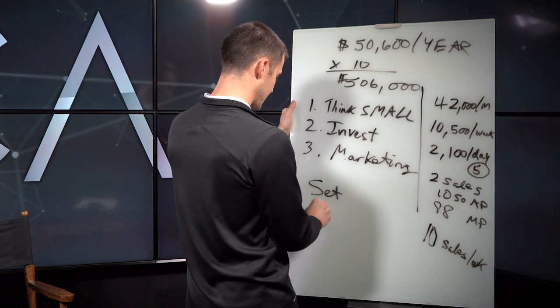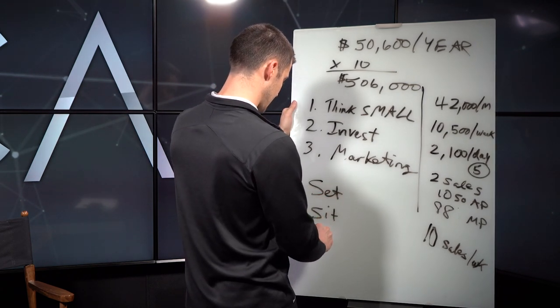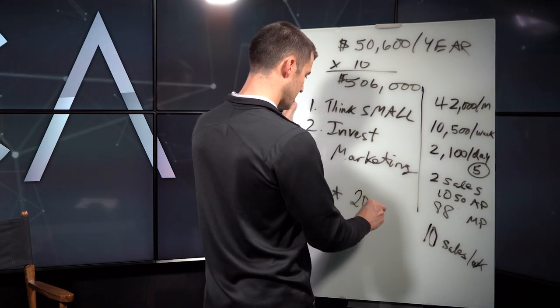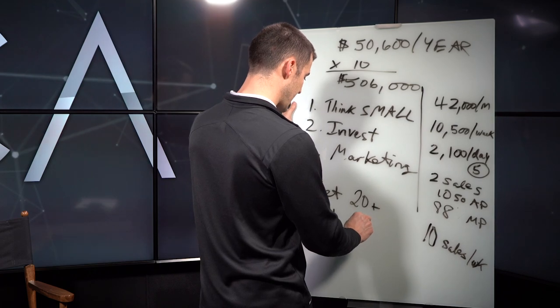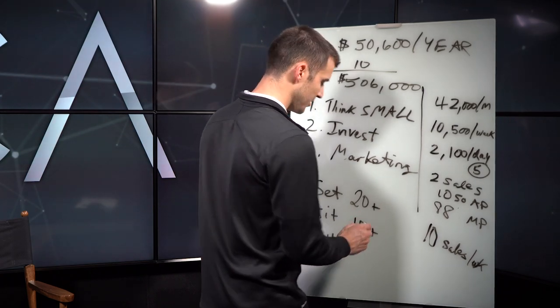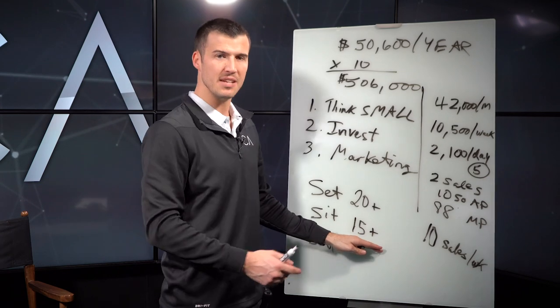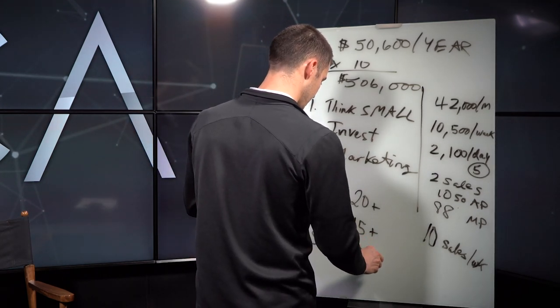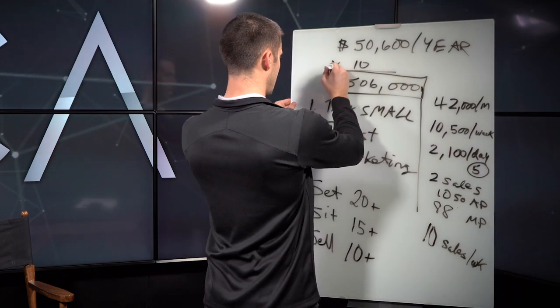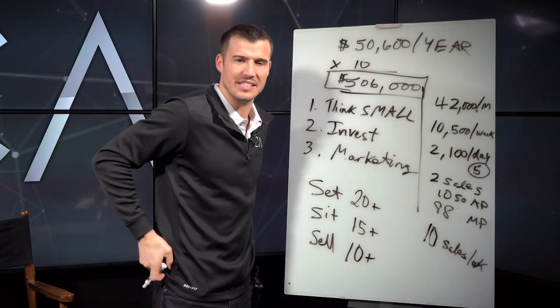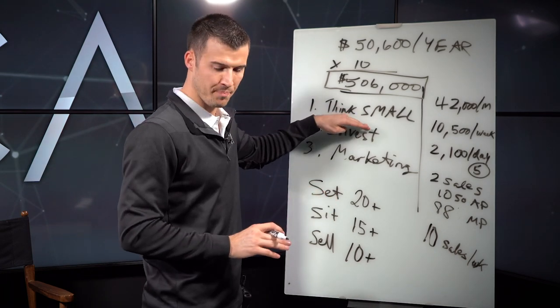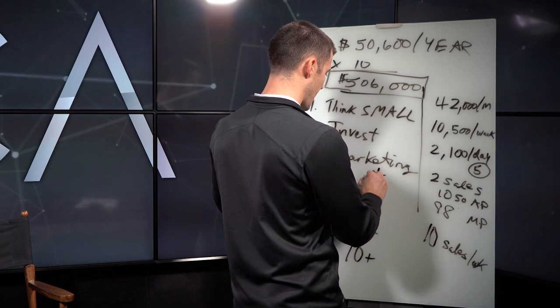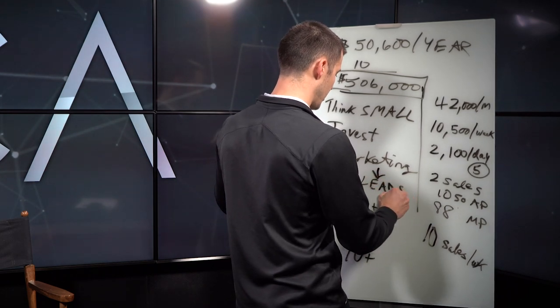I teach a system called set, sit and sell. So that means you would need to set 20 plus appointments per week, sit down and ask Betty, would you like to give me money, 15 plus per week, and sell 10 plus per week. And then all of a sudden that doesn't seem as daunting and crazy as you think.